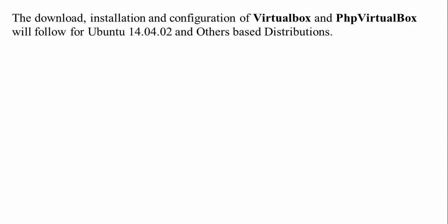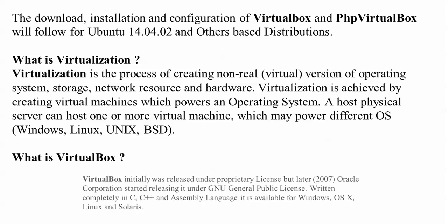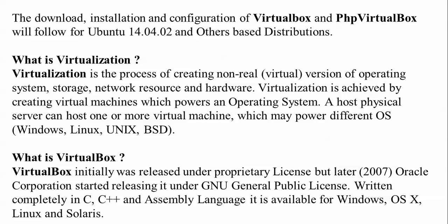What is virtualization? Virtualization is the process of creating virtual systems — including storage and network resources — and providing hardware resources via virtual machines supplied by the operating system. It can host and monitor your servers and provides different operating systems like Windows, Linux, Unix, and BSD. VirtualBox was released under a license in 2007 under Oracle Corporation.